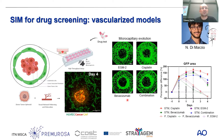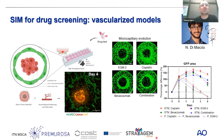We can study this capillary network in a high-throughput setup, studying different drugs — for instance, microcapillary evolution depending on anti-cancer drug, anti-angiogenic drug, and their combinations — finding the most useful therapy for a specific patient. This work is being conducted within the PRemurosa and Mercury projects, and in collaboration with the COST Action StratRegen.